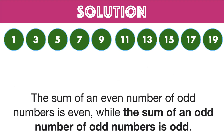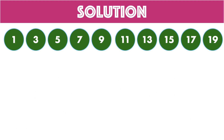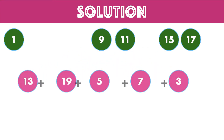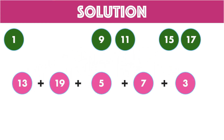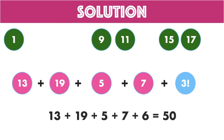One way to do it is like this: 13 plus 19 plus 5 plus 7 plus 3, and perform the factorial operation on 3. We know that 3 factorial equals 3 times 2 times 1, which equals 6. This will result in 50. There can be other ways in which you can achieve the solution.